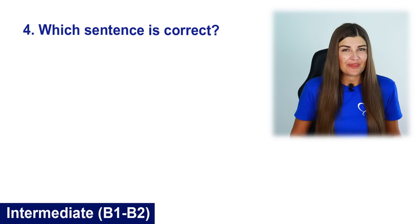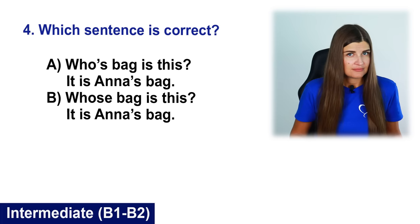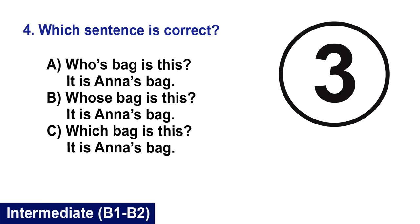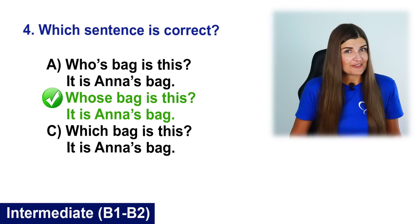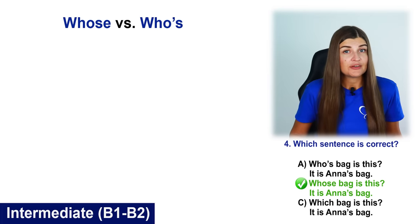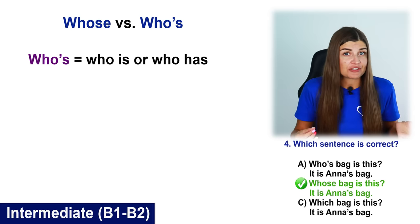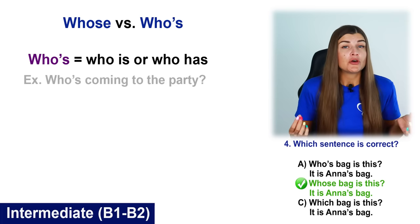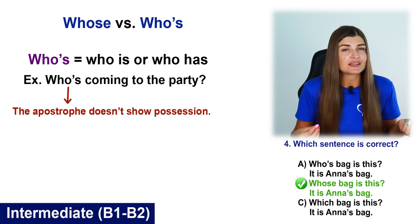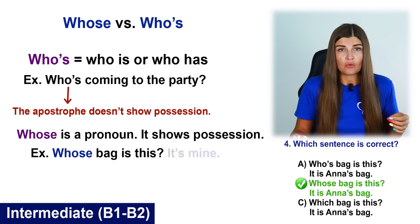Which sentence is correct? A. Whose bag is this? It is Anna's bag. B. Whose bag is this? It is Anna's bag. C. Which bag is this? The correct answer is B. What's the difference between whose and who's? They sound the same but have a different meaning. Who's is a contraction of who is or who has — for example, who's coming to the party? The apostrophe doesn't show possession, it's a contraction. Whose is a pronoun and shows possession — whose bag is this? It's mine or it's hers.